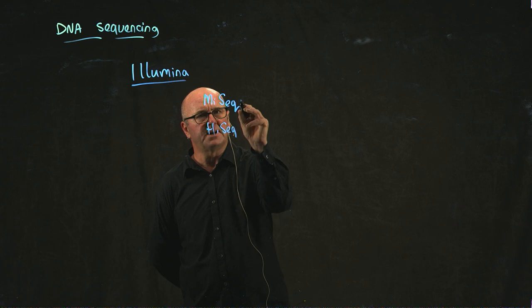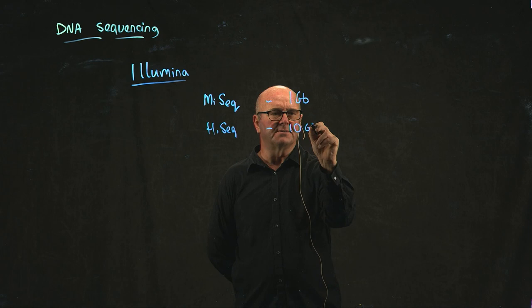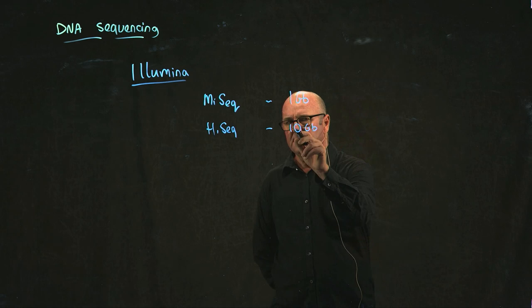The MySeq generates in the order of about a gigabase pair of reads. And the HiSeq, if you get it really cranked up, can generate in the order of 10 gigabases or maybe even 15 gigabases if you really optimize it.